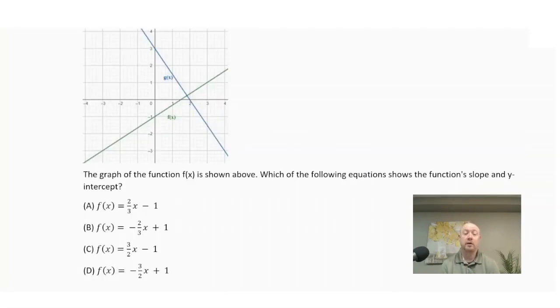The graph of the function f(x) is shown above. Which of the following equations shows the function slope and y-intercept? So we have two graphs. We have the green graph, which is f(x), what we want to focus on. And they also give us g(x) here, but we're not going to be using g(x). So we know in slope intercept form that the equation would be y equals mx plus b, where m represents our slope and b represents our y-intercept.